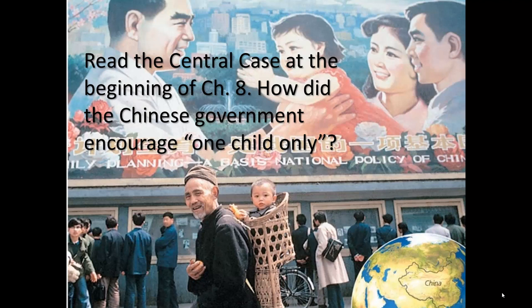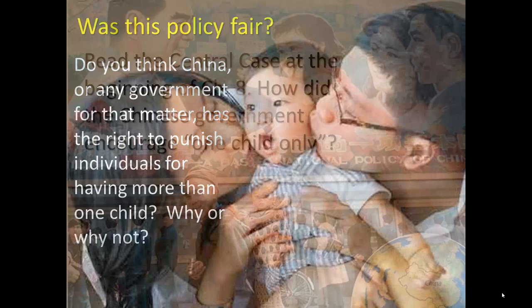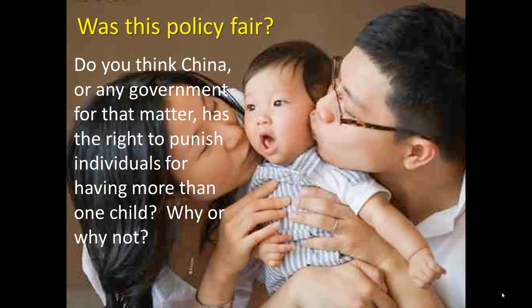I'd like you to read the central case at the beginning of chapter eight. It's about China's one-child policy. Ask yourself as you're reading it: how did the Chinese government encourage one child only? Was it through incentives? Was it through punishments? And was this policy fair? Do you think China, or any government for that matter, has the right to punish individuals for having more than one child? Why or why not?